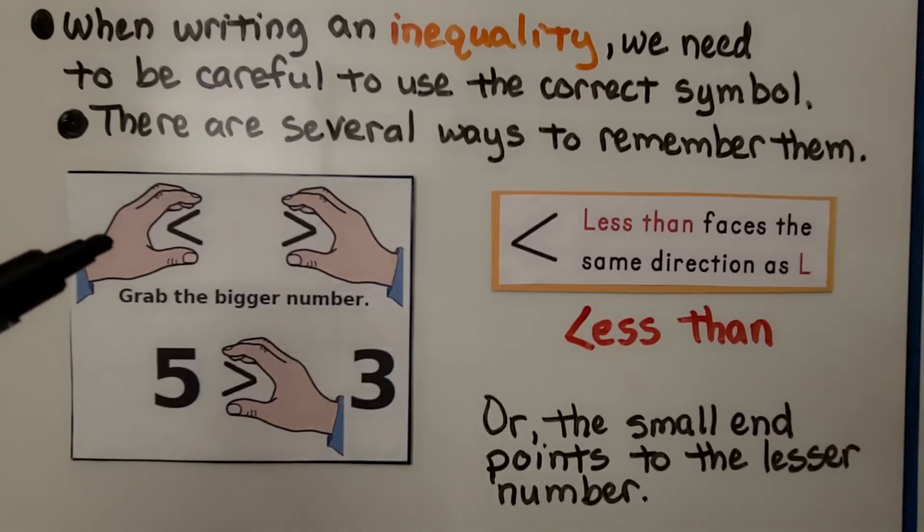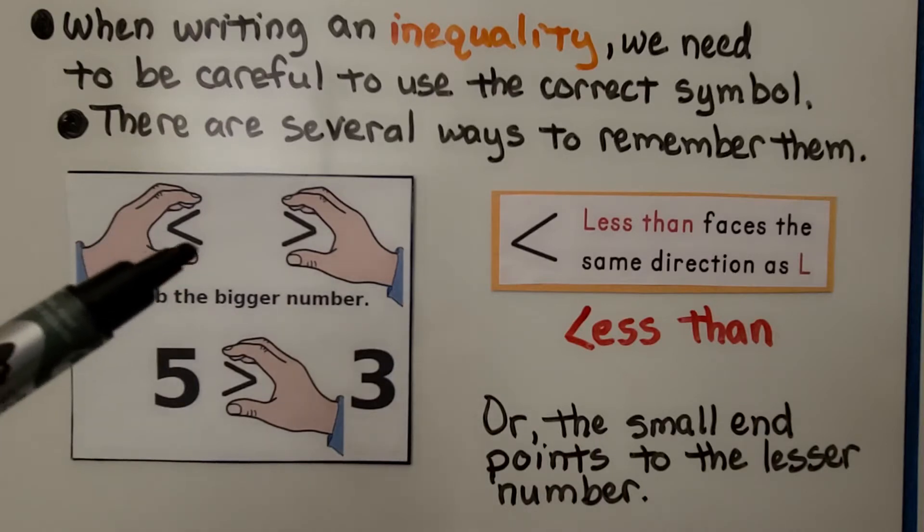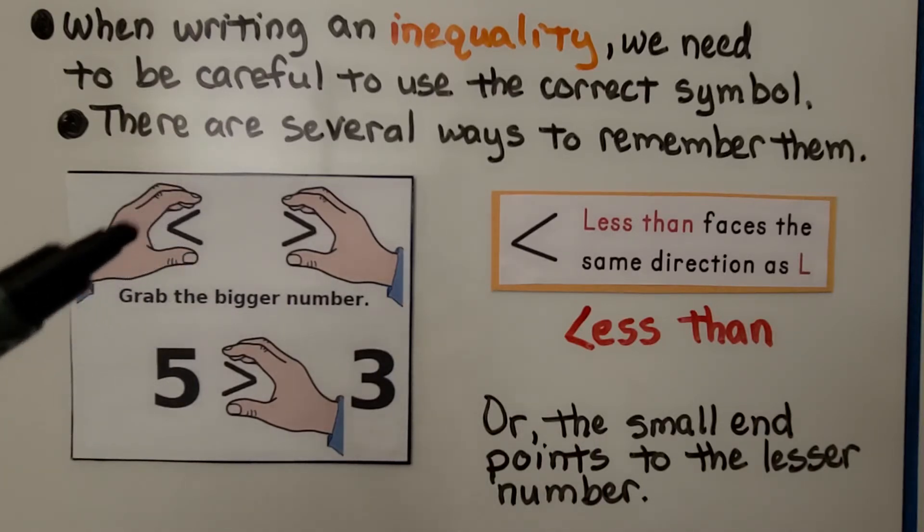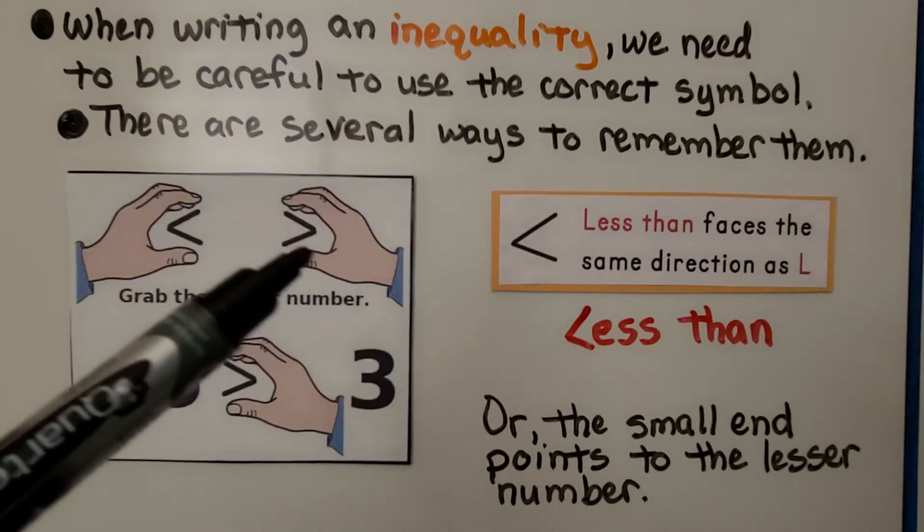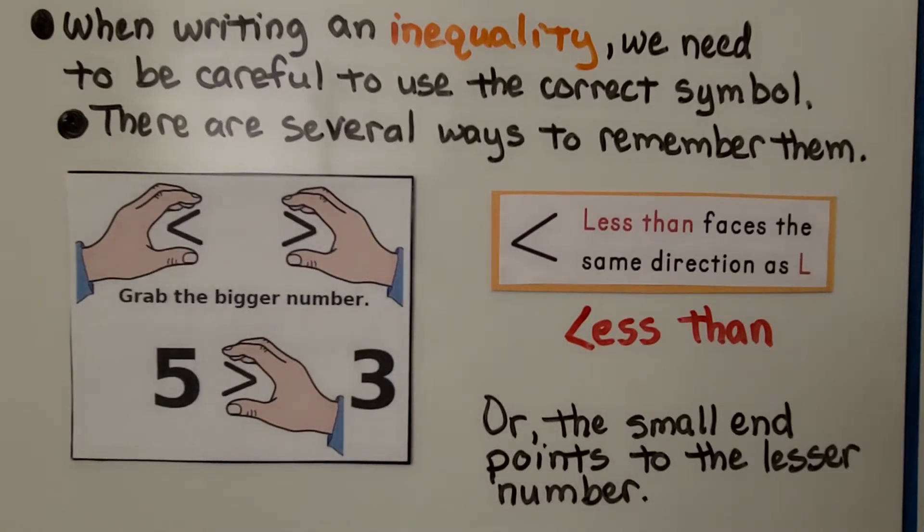You can also think of it as you grab the bigger number and your hand is shaped like the symbol. So if you're grabbing the big number on this side, well then you're going to use the less than. And if you're grabbing the number with your right hand, because it's on this side, that's going to be greater than.